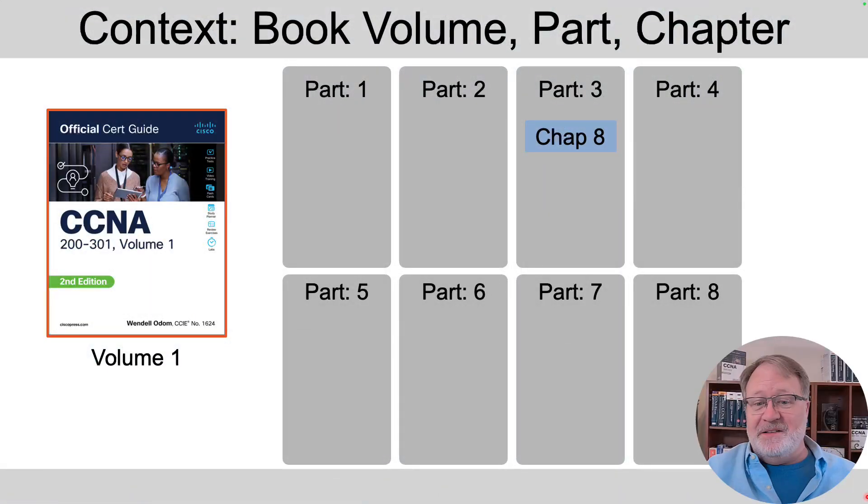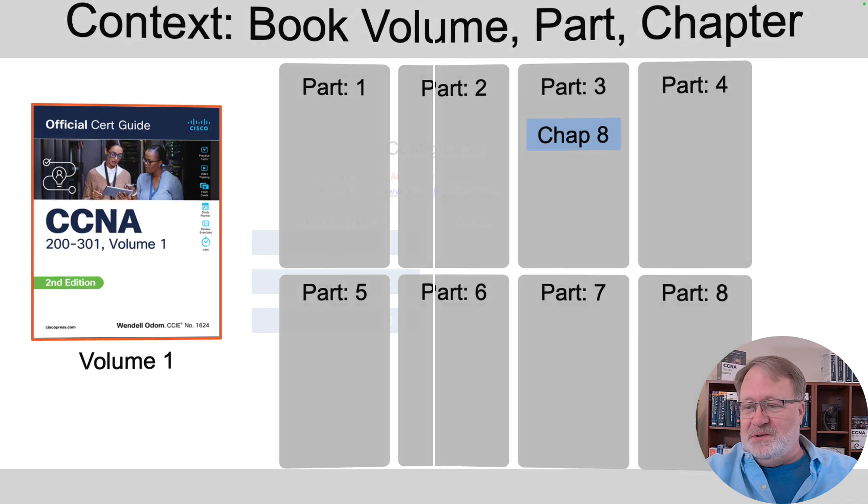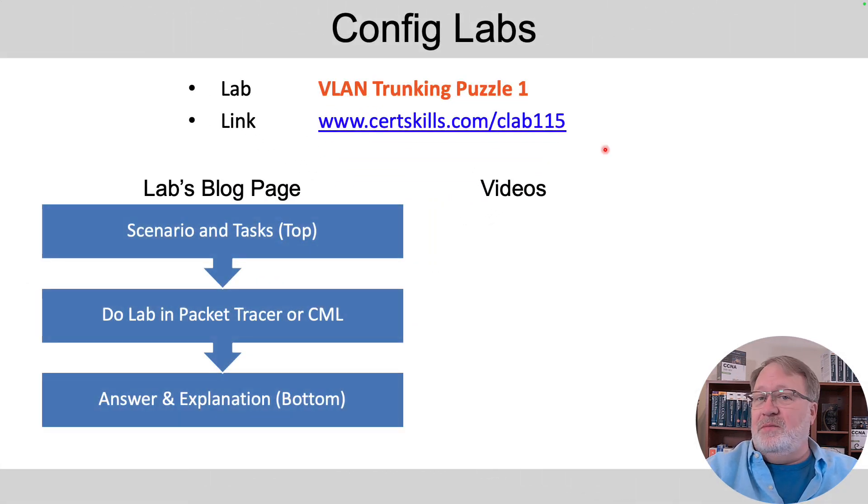So let's set some context. As usual, you can read along with the books. If you've got Volume 1 of the CCNA Official Cert Guide, we're in Part 3, Chapter 8, Section 2. This lab is on my blog site. There's the direct link. You can go to see the blog page about this lab. It's titled VLAN Trunking Puzzle No. 1.